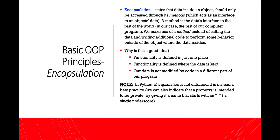So we'll look at some basic OOP principles and we'll start with encapsulation. Encapsulation states that data inside an object should only be accessed through its methods, which acts as an interface to an object's data. A method is the data's interface to the rest of the world — in our case, the rest of our computer program. We make use of a method instead of calling the data and writing additional code to perform some behavior outside of the object where the data resides.